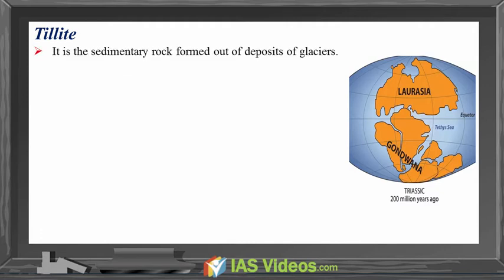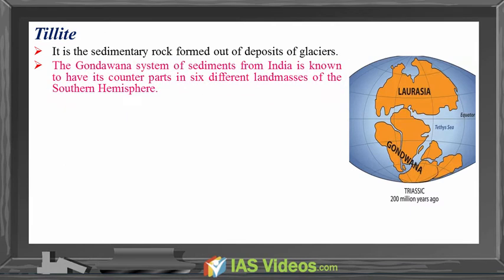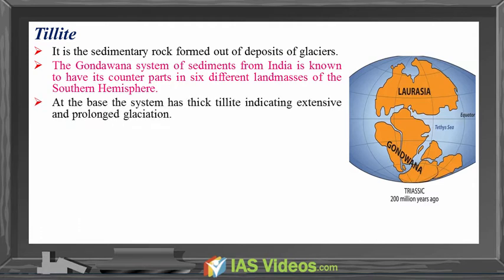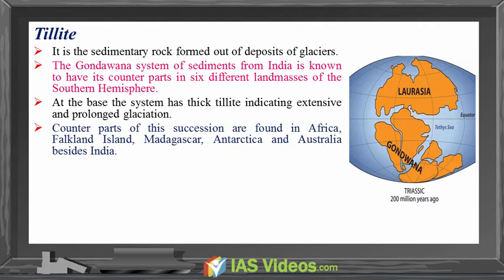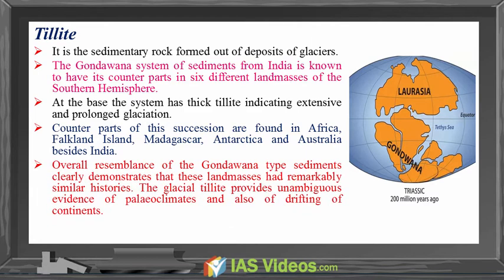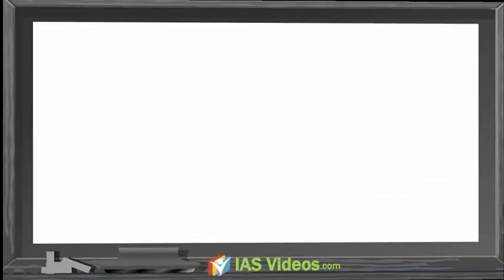Tillite is a sedimentary rock formed out of deposits of glaciers. The Gondwana system of sediments from India is known to have its counterparts in six different land masses of the southern hemisphere. At the base, the system has thick tillite indicating extensive and prolonged glaciation. Counterparts of this succession are found in Africa, Falkland Island, Madagascar, Antarctica, and Australia besides India. The overall resemblance of the Gondwana-type sediments clearly demonstrates that these land masses have remarkably similar histories. The glacial tillite provides unambiguous evidence of paleo-climates and also of the drifting of continents.